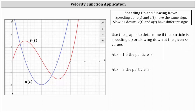We're asked to use the graphs of the velocity function and acceleration function to determine if the particle is speeding up or slowing down at the given x values. We have x equals 1.5 and x equals 3.